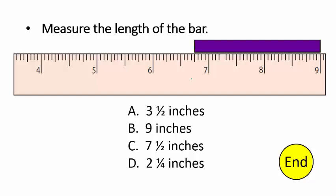Regardless of where the bar starts, we have to measure it — how many inches is this? We can do that with addition. There's one inch, two inches, and I just want to focus on this little bit here: that's a quarter inch, quarter inch, quarter inch, quarter inch. So we're at two and one quarter inches — Choice D.